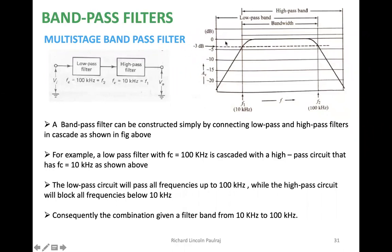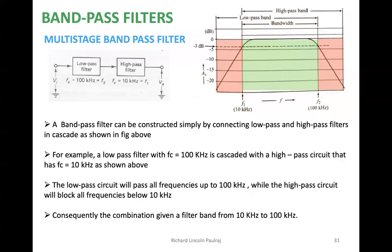We need to pass a section and block the other section, and that happens only when we combine two things. Usually we don't get the required performance with a single circuit, so we try to create a kind of hybrid. This is a multi-band pass filter — a combination of low pass and high pass filters. A band pass filter can be constructed simply by using low pass and high pass filters in cascade.